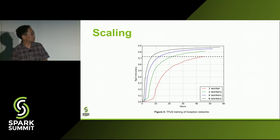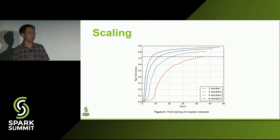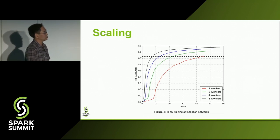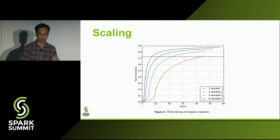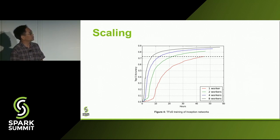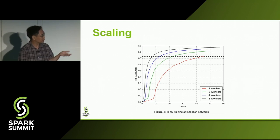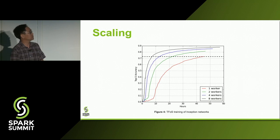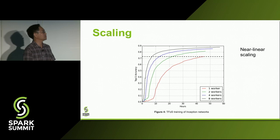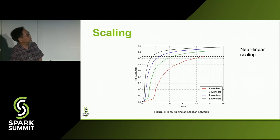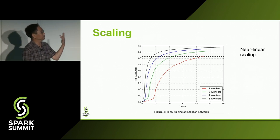This is from our blog post back in February. It's a benchmark of running the Inception image recognition network published by the TensorFlow team. It demonstrates that as you scale up the workers on the Spark YARN side, you get essentially linear scaling — the one-worker case takes something like 45 to 48 hours, you double that and you end up at 22 hours, and so on.